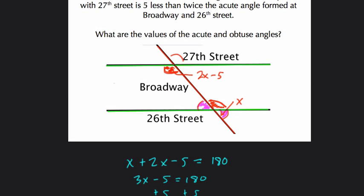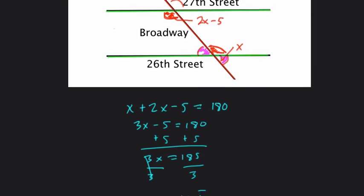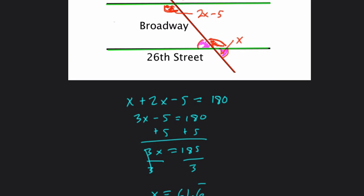They want to know what are the values of the acute and obtuse angles. So the acute angle is the smaller angle. That's just x, and that equals 0.6 repeating. So 61 and 2 thirds.